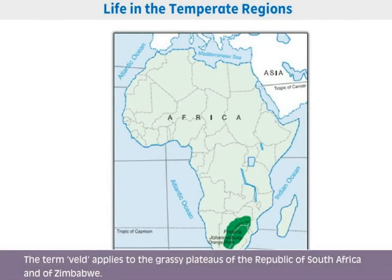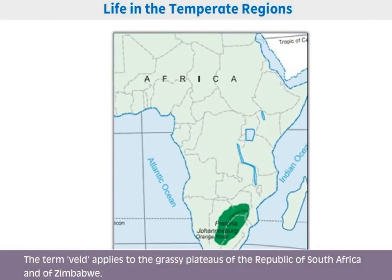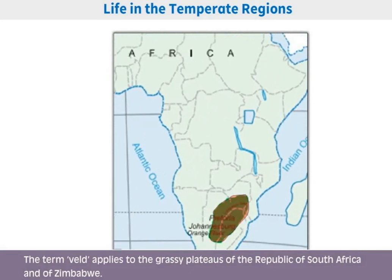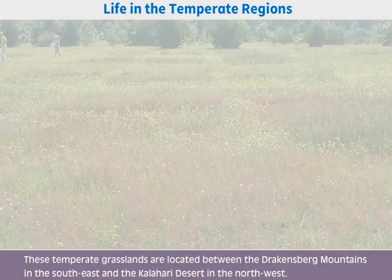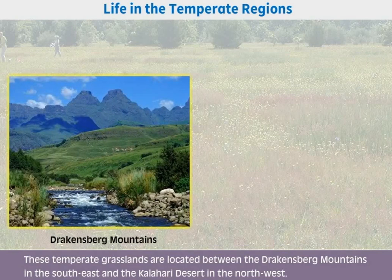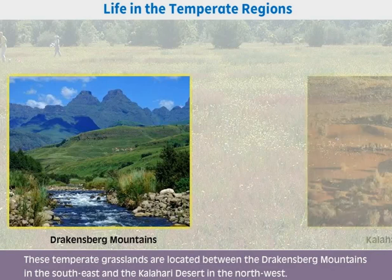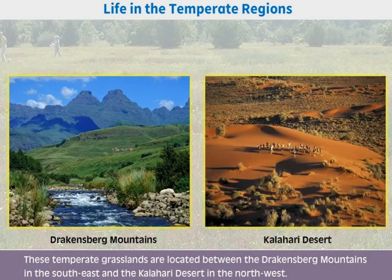The term veld applies to the grassy plateaus of the Republic of South Africa and of Zimbabwe. These temperate grasslands are located between the Drakensberg Mountains in the southeast and the Kalahari Desert in the northwest.